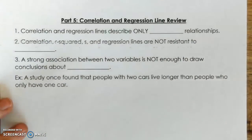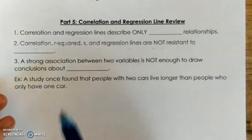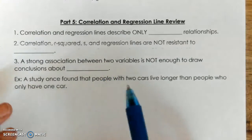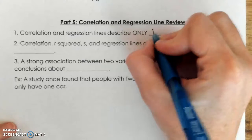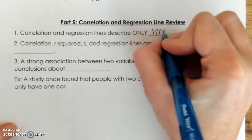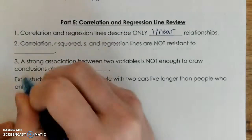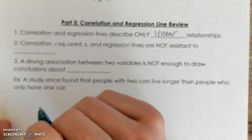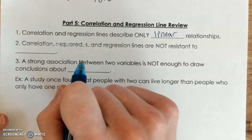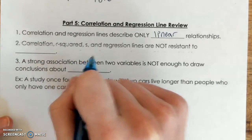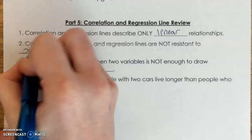Our last part is just summarizing everything. Correlation and regression lines describe only certain types of relationships, and that type is linear — they refer only to linear models. Correlation, R squared, S, and regression lines are not resistant to outliers.